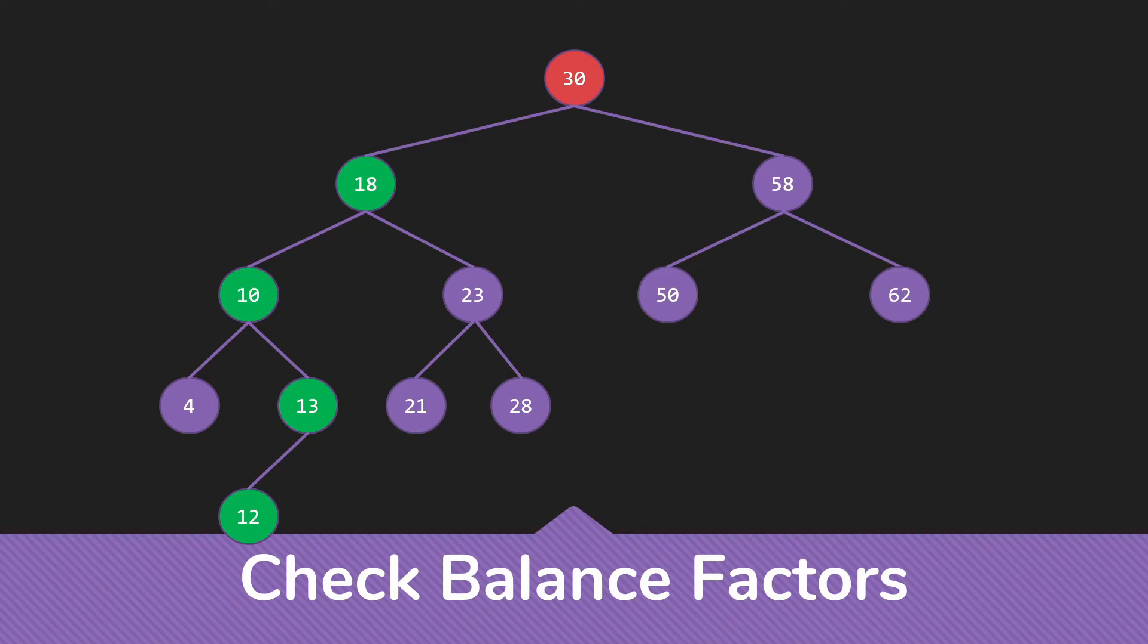So that means we're going to make the 18 the parent and the 30 its child. Now, the issue here is going to be with the 23. Because the 30 is now going to be the right child of 18. The 23 has to go somewhere. And what's going to happen here is that the 23 is going to replace the 18 as the left child of the 30.